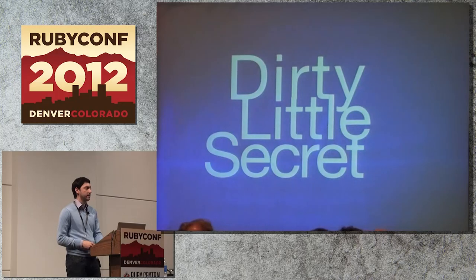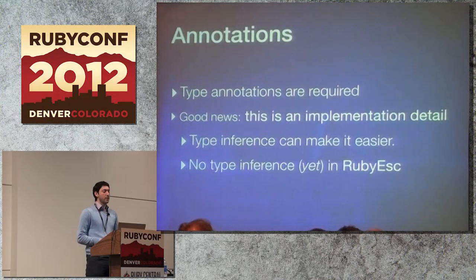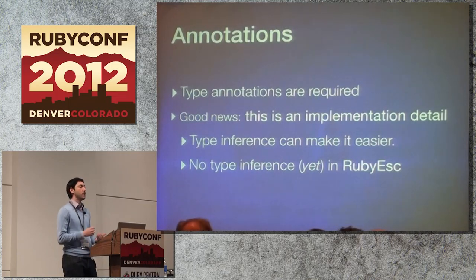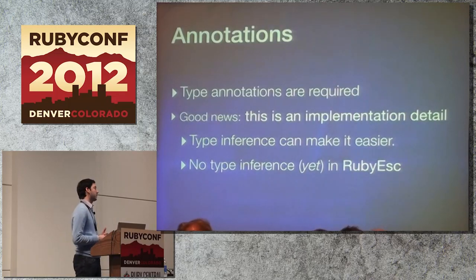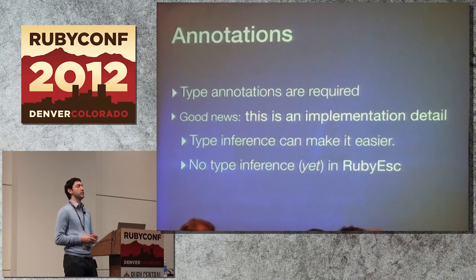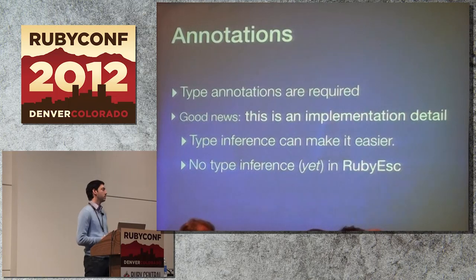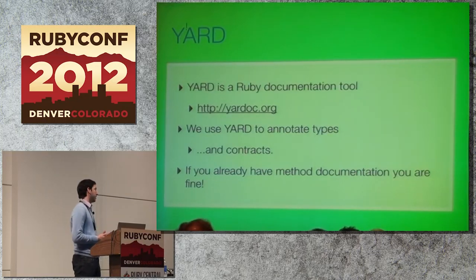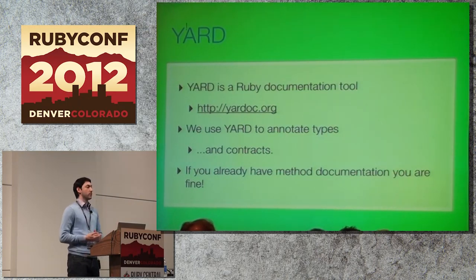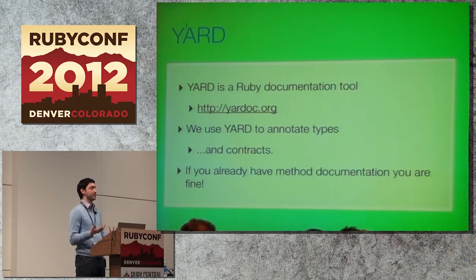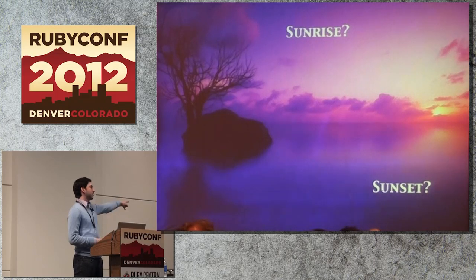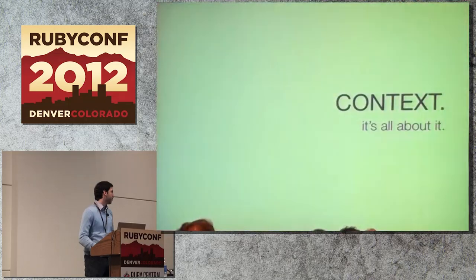There's a dirty little secret: we use type annotations, which are required in Ruby ESC right now. Most of it is an implementation detail — we can get rid of a lot of typing with type inference, though we don't support that yet. You can't get rid of all type annotations since it is static analysis and we need to tell our tooling what we're operating on. You can grab YARD at yardoc.org. We use YARD to annotate all types and contracts. If you have method documentation already marked up with types, you're good to go except for the contract part — arguably the harder part, but you're halfway there.